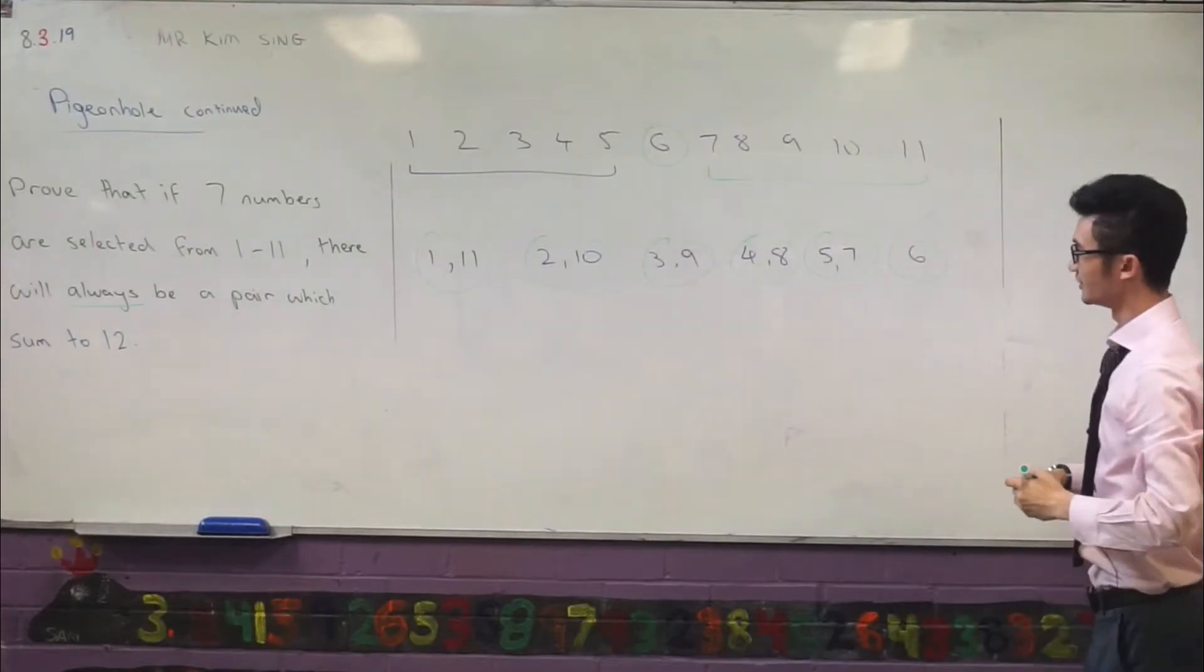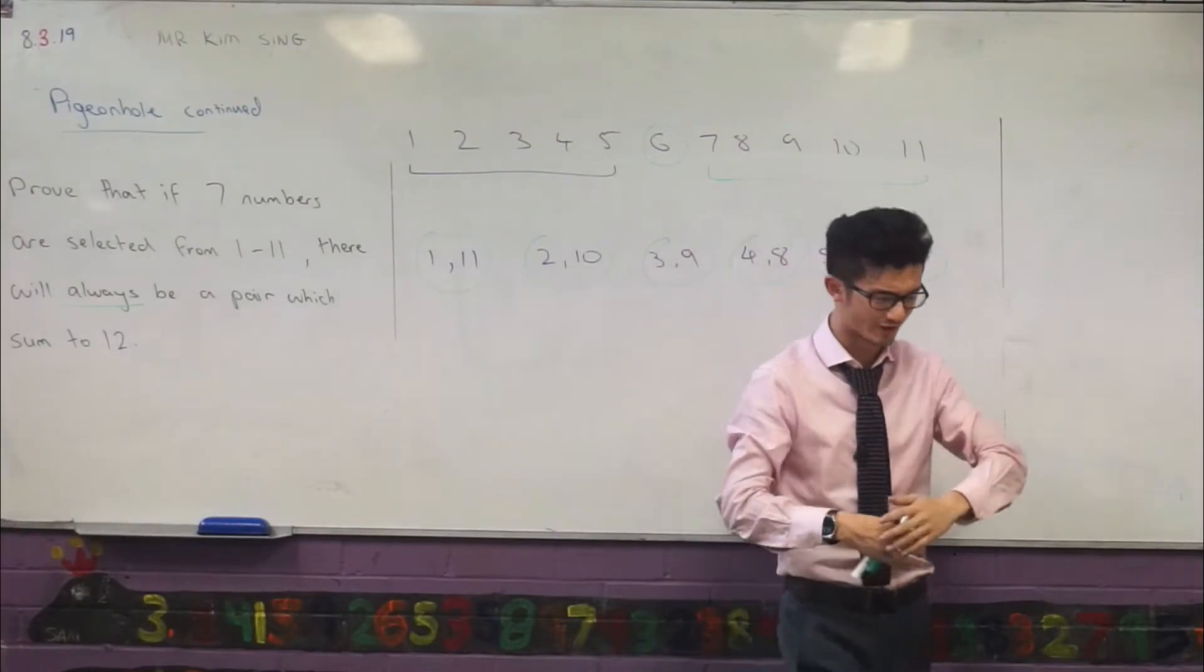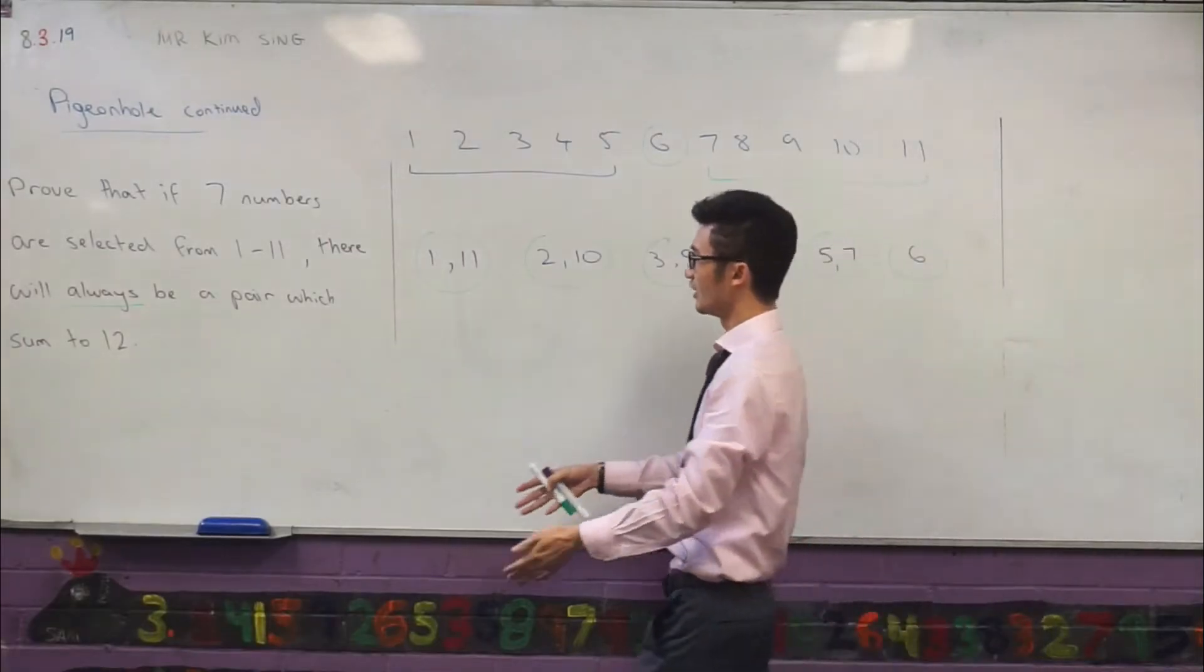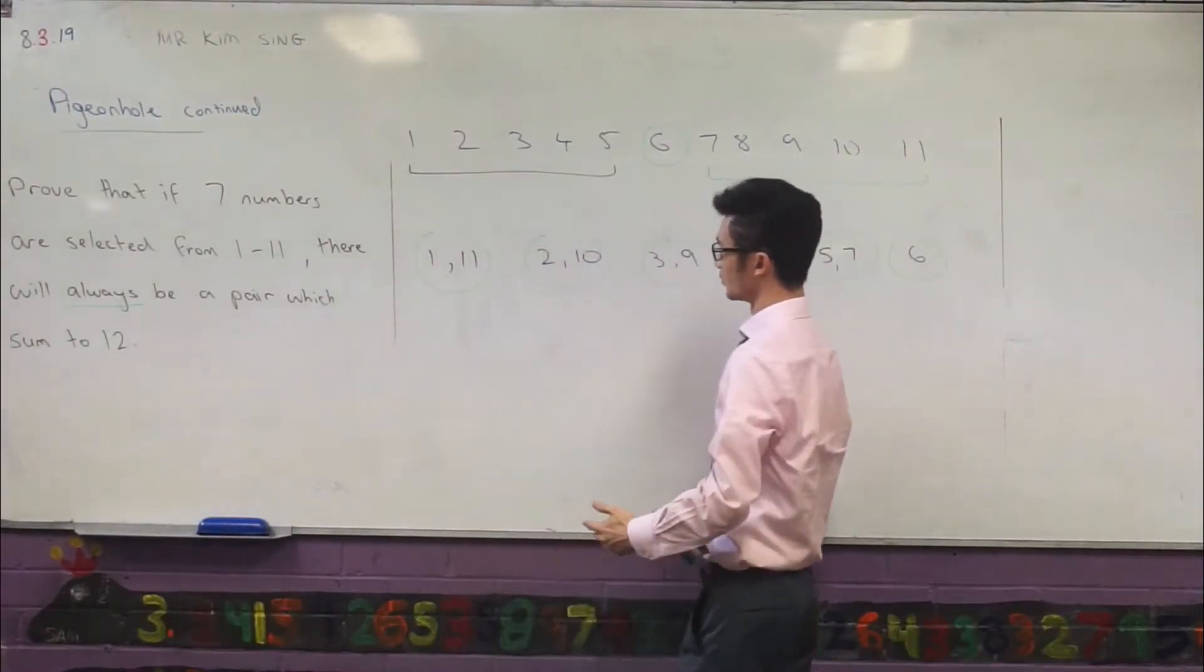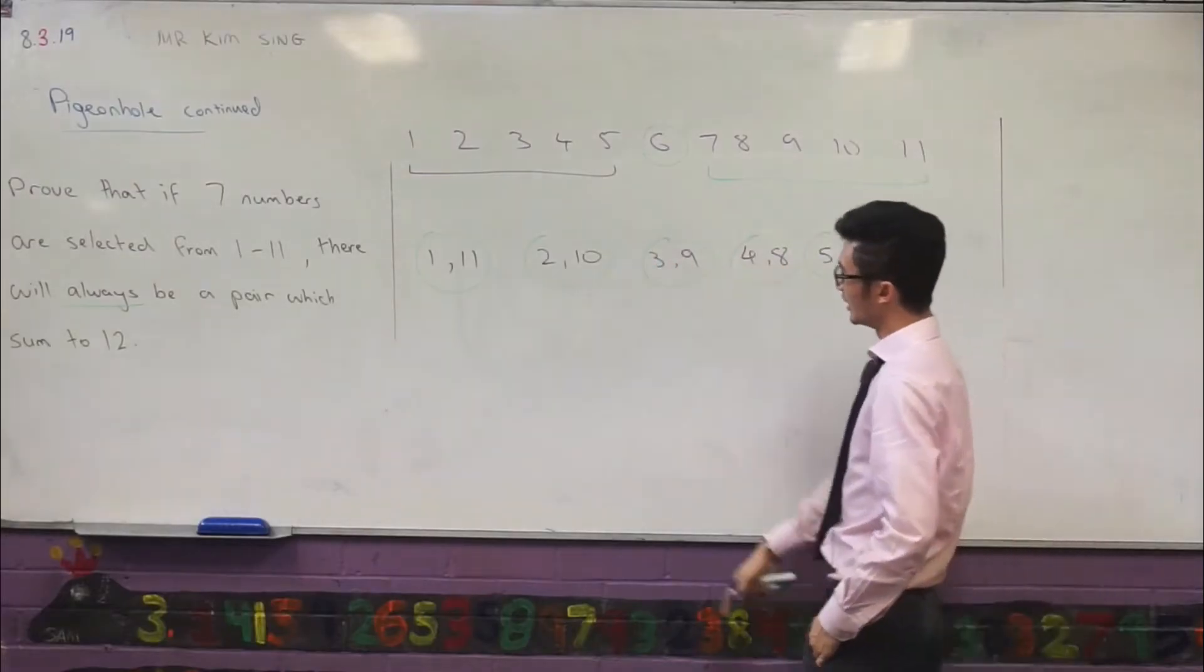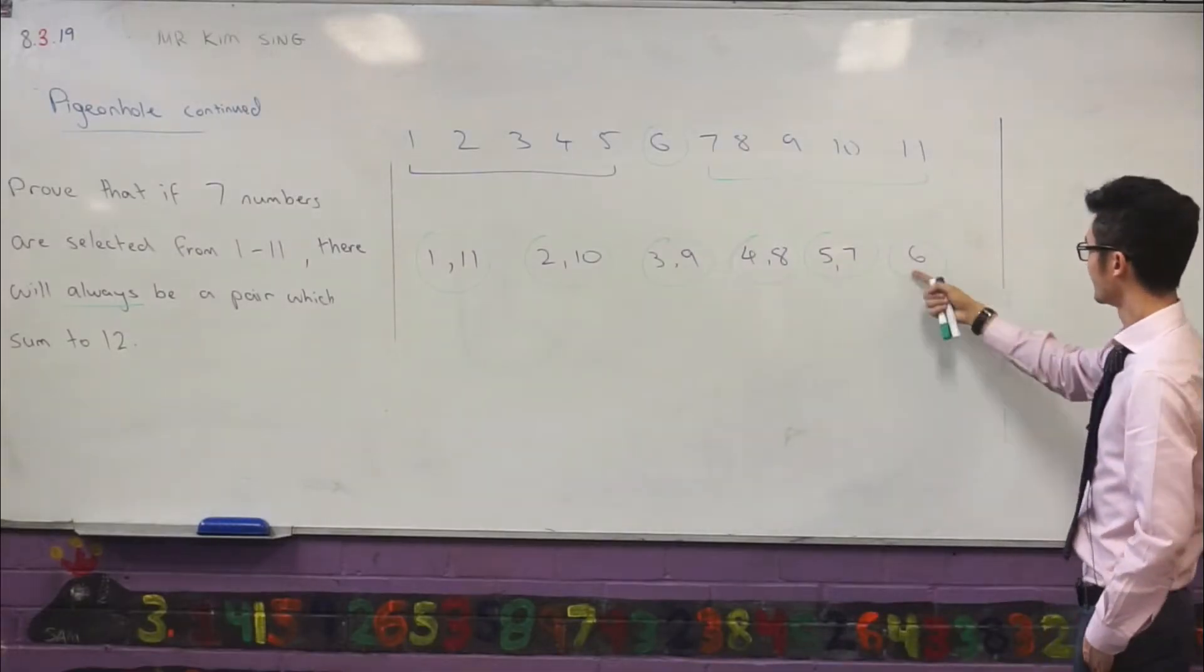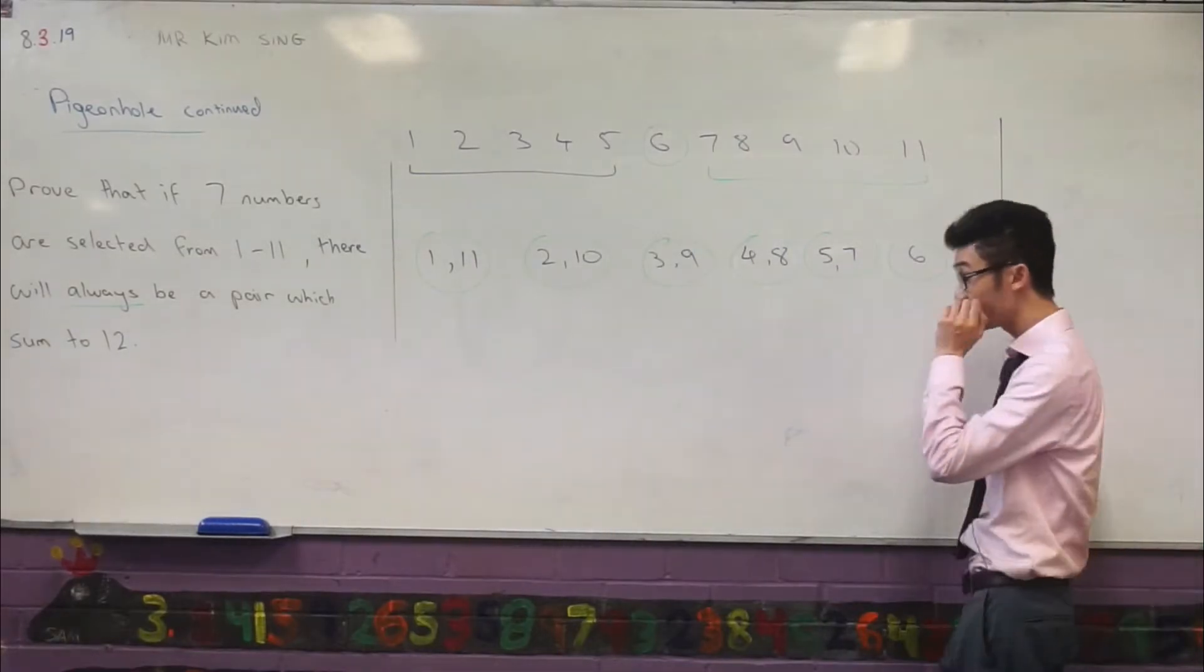You notice something interesting, don't you? You can see that if I try and think about the worst case scenario, where I try and avoid the situation where I choose numbers which sum to 12, I'd be choosing one from each of these groups first. I'd maybe pick 1, then maybe 10, 3, 8, and then 7, and 6. I can choose 6 numbers.